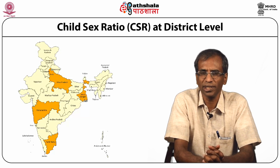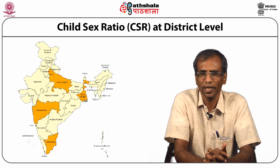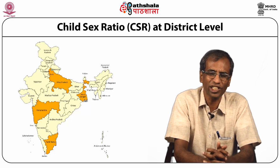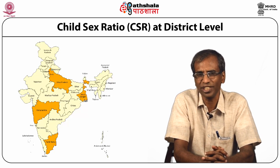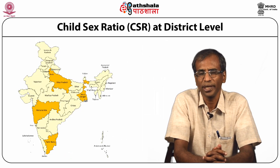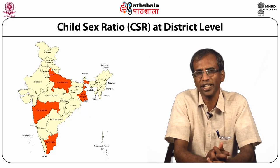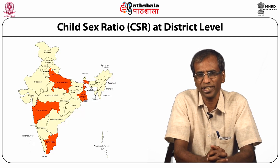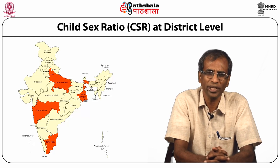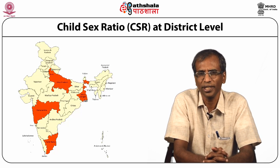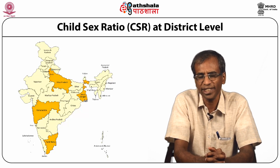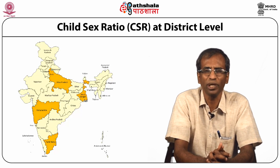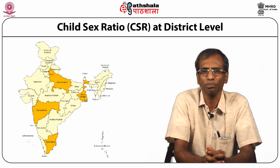This is India with child sex ratios in different colours. Child sex ratio indicates the extent of discrimination against girls before birth, at birth, and after birth in the initial years of life. If there is no discrimination against the girl child, sex ratios can be as high as 980 girls per 1000 boys. But large parts of India are increasingly falling below 900, and sometimes even below 800.